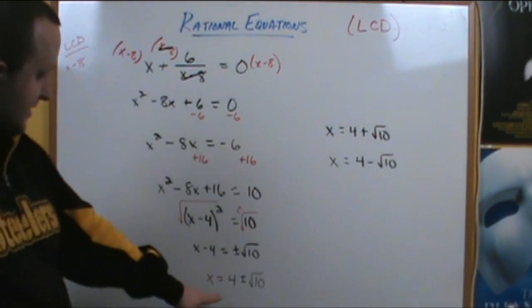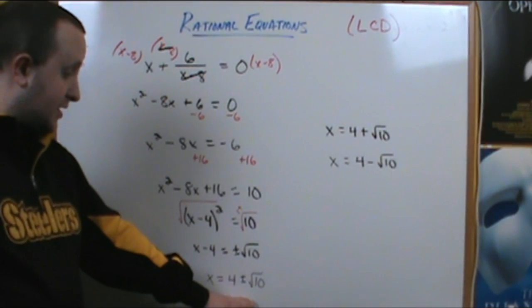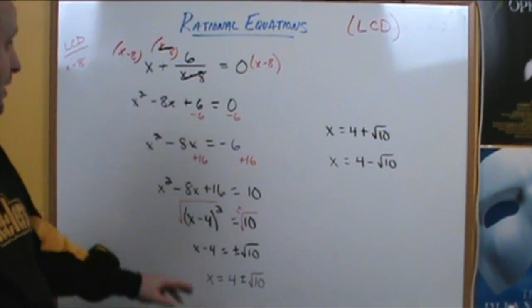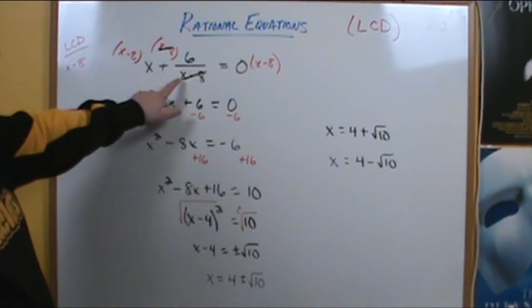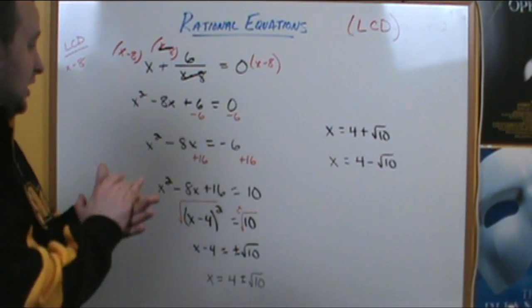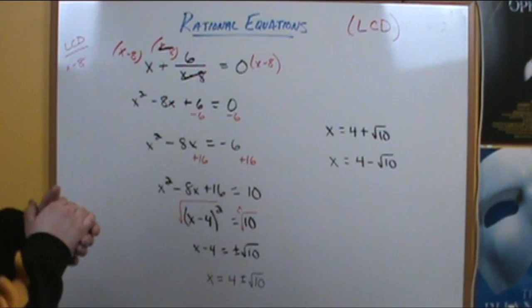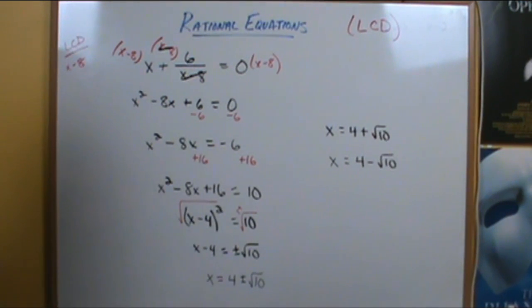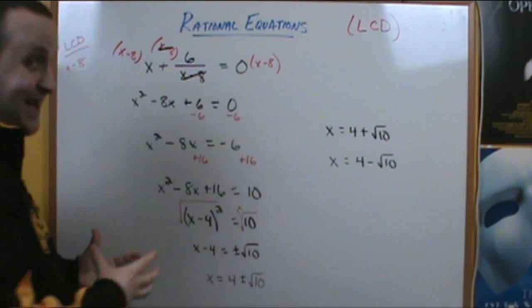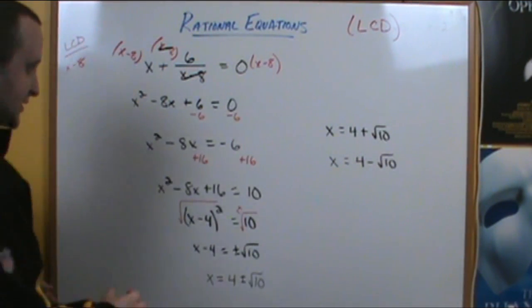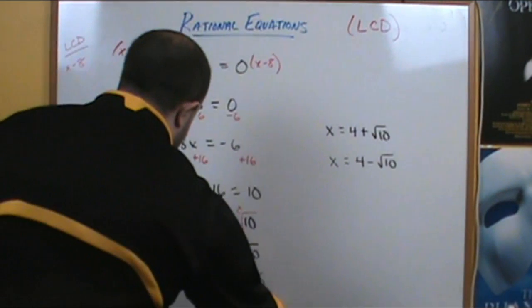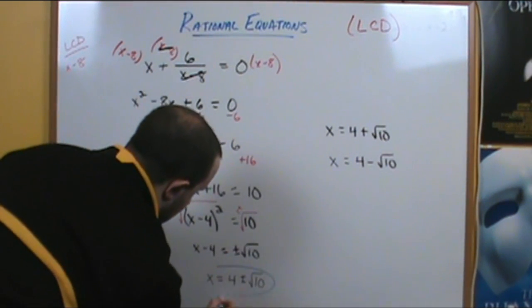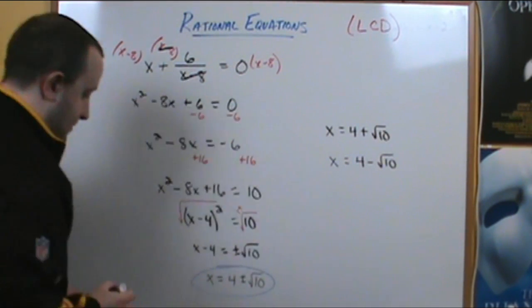If we take the solutions 4 plus or minus the square root of 10 and substitute them back into our original equation, you would see that they both work and are both valid solutions. There would be no extraneous solution in this case. So those are your answers.